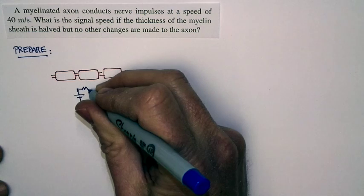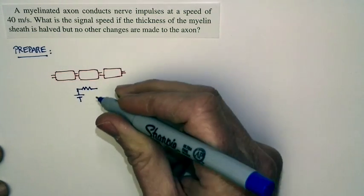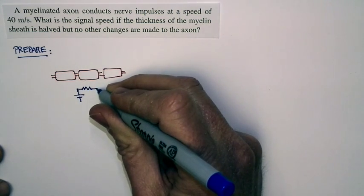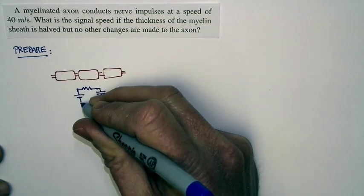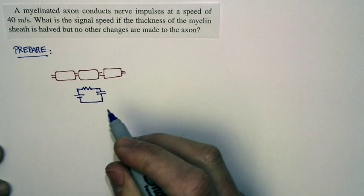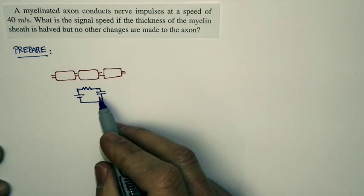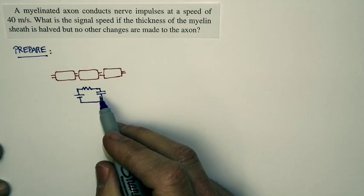And then current goes down the inside of the axon, and there's a certain resistance associated with that. And then it charges up the capacitance of the cell membrane. And so this point right here, I'm going to charge up like charging up a capacitor.